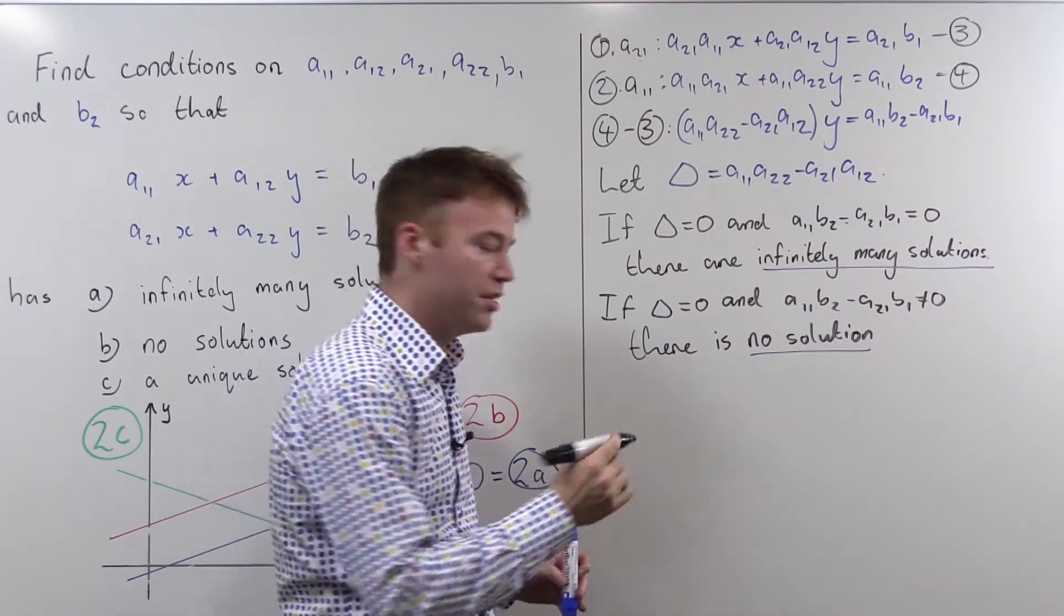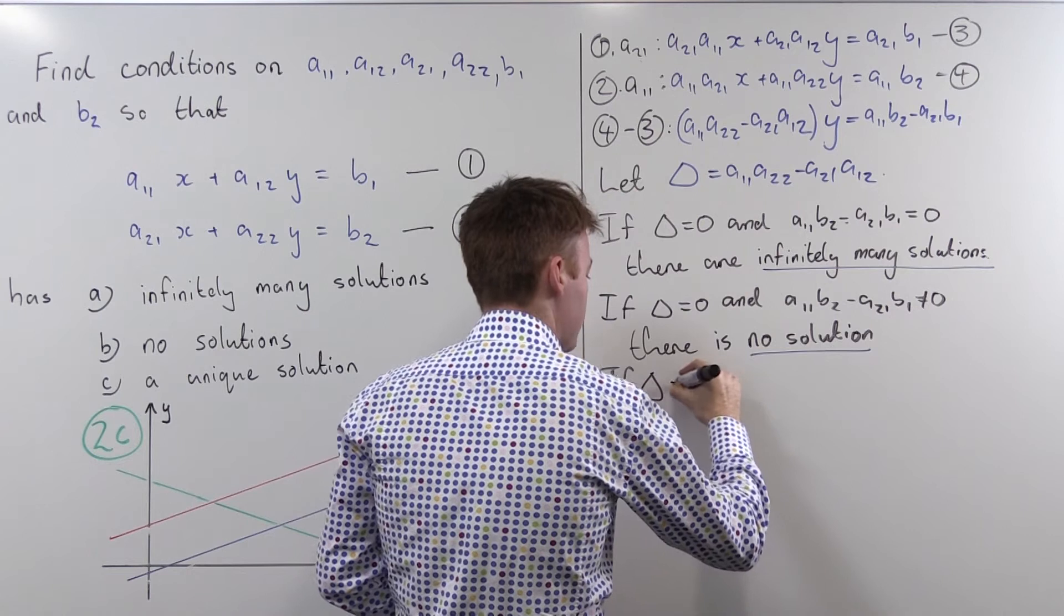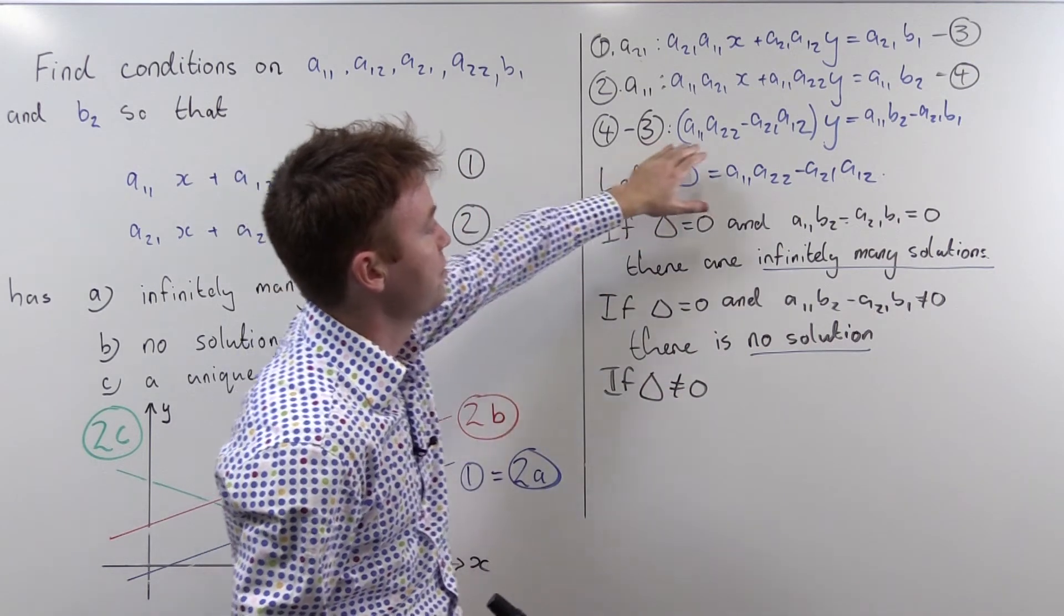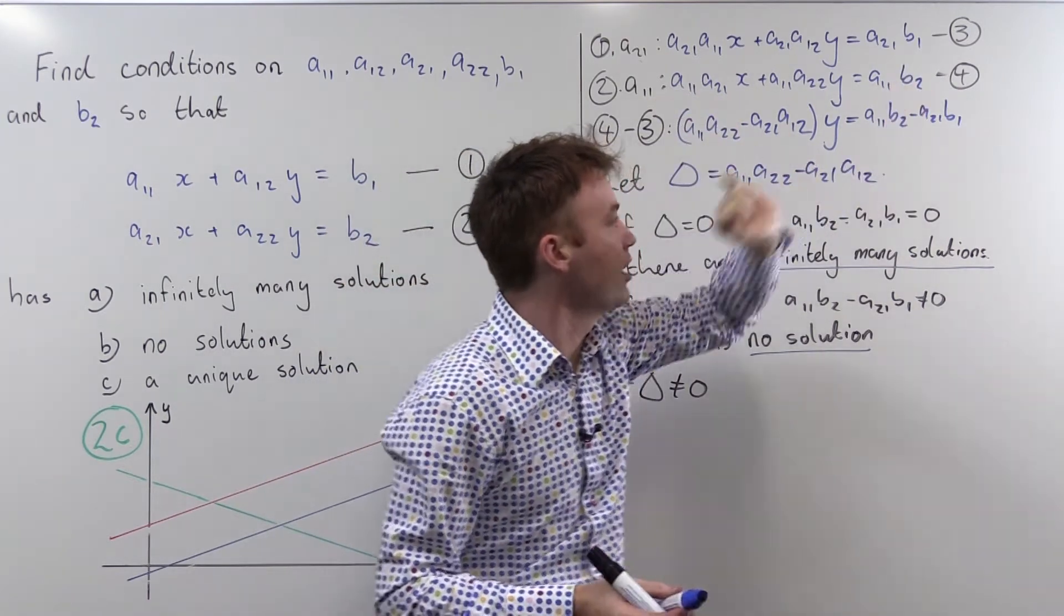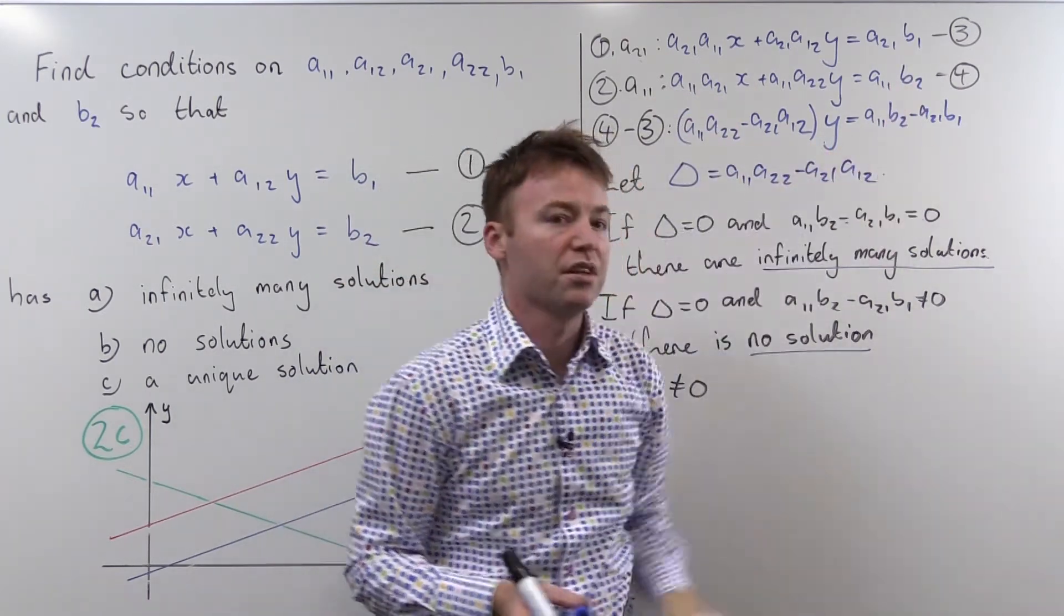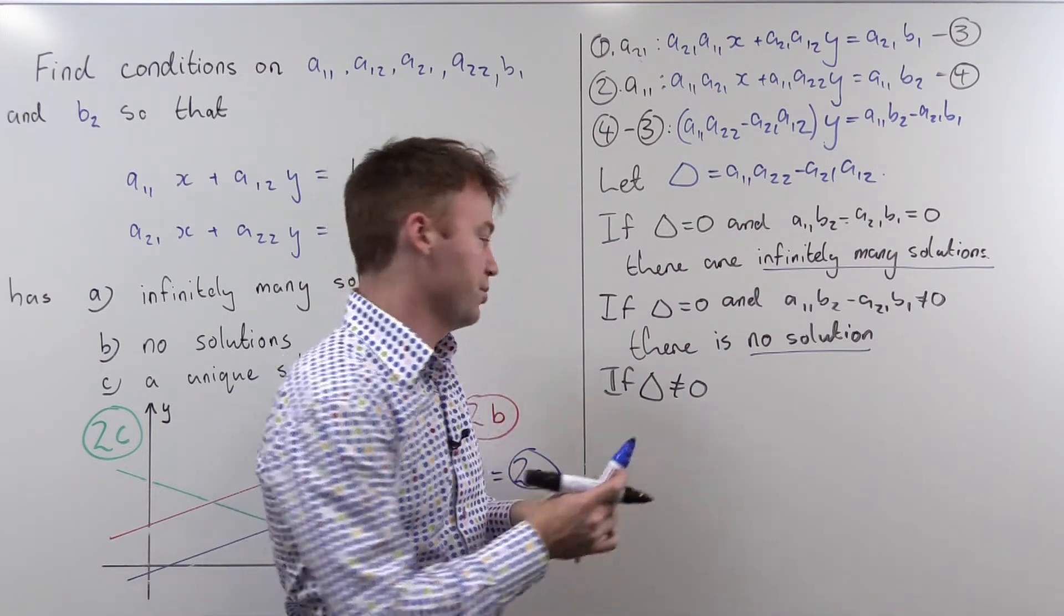There's one more scenario to consider and that's what happens if delta is not equal to zero. And if delta is not equal to zero then I can take my non-zero number here, divide both sides through by it, and I have y equals some constant, some single constant which tells me that there are unique solutions.